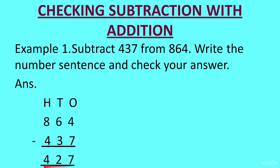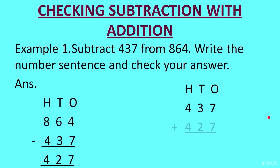First we will do checking of subtraction with addition. We have to check using addition, so we will add 437 and 427. When we add, we should get the answer as 864. We write the place values: 437 plus 427. When we add we get 864, which means our calculation is correct.